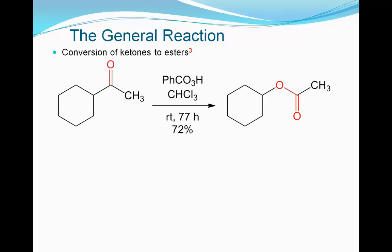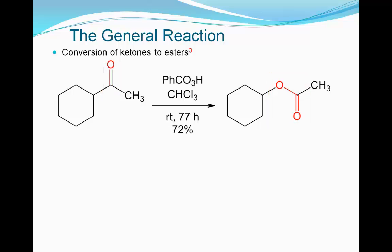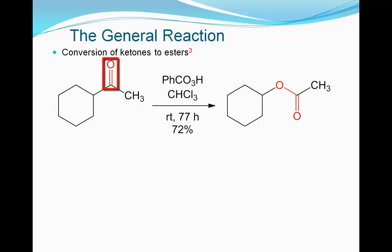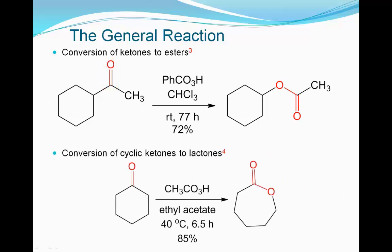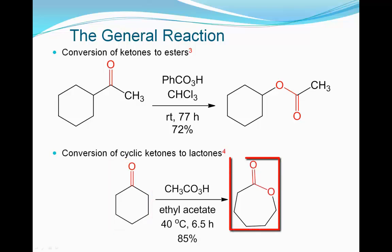As illustrated in this example, the Baeyer-Villiger oxidation converts ketones to esters. Note that the oxygen atom is selectively incorporated between the cyclohexyl group and the carbonyl group, instead of between the methyl group and the carbonyl group. The Baeyer-Villiger oxidation converts cyclic ketones to cyclic esters, which are also known as lactones.